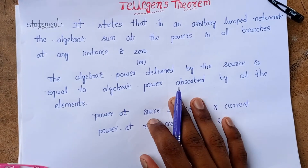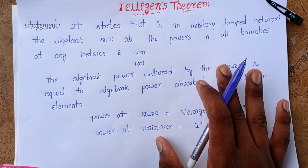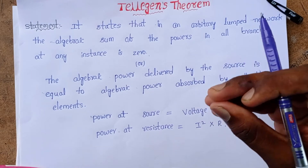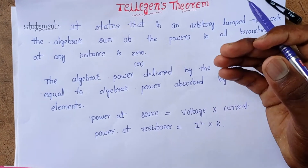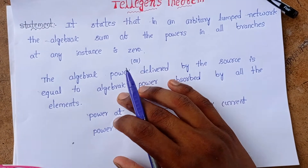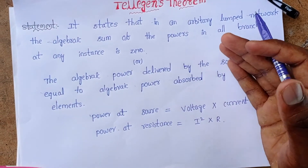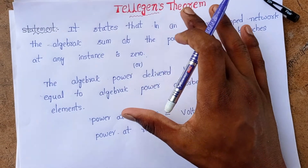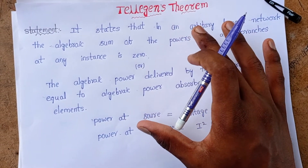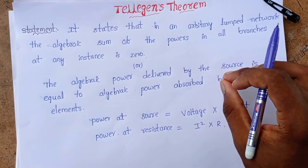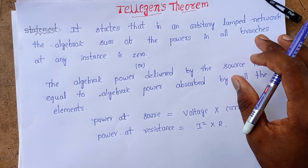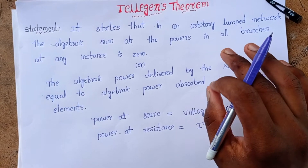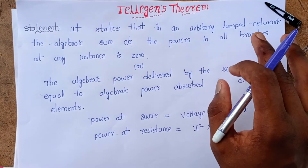This is similar to KVL — KVL states that voltage rises equal voltage drops. Here also, the power delivered is equal to the power absorbed. Simply remember: Tellegen's theorem states that the power delivered by the source is equal to the power absorbed by the elements.